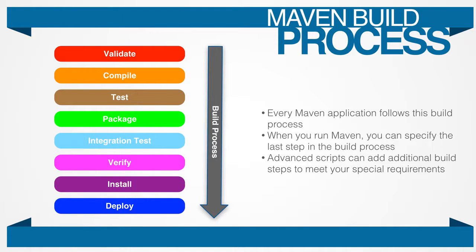Maven has the following default build phases that you can use: validate, compile, test, package, integration test, verify, install, and deploy. If you execute the package phase, you'll run the validate, compile, test, and package build phases. If you execute the compile phase, you will run the validate and compile build phases. You can also insert other build phases into the lifecycle, but for the most part these are the only build phases that we will use.